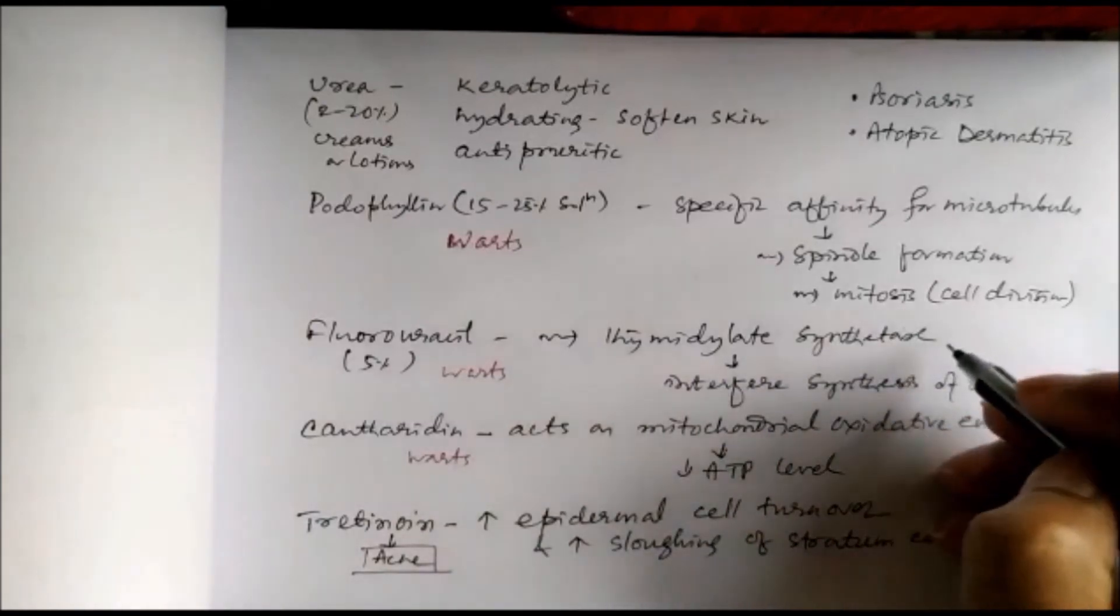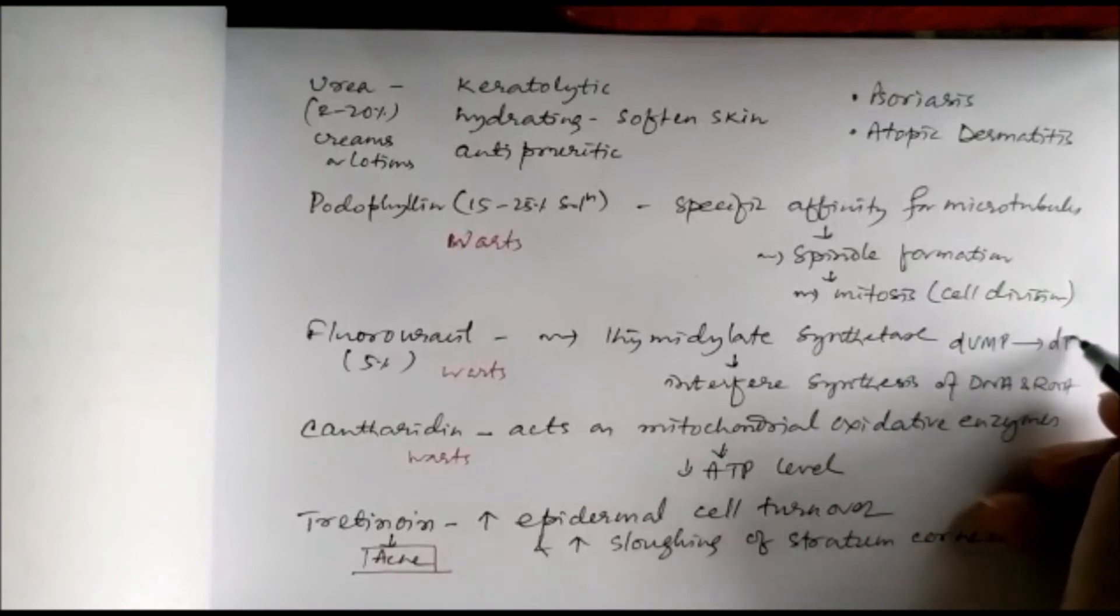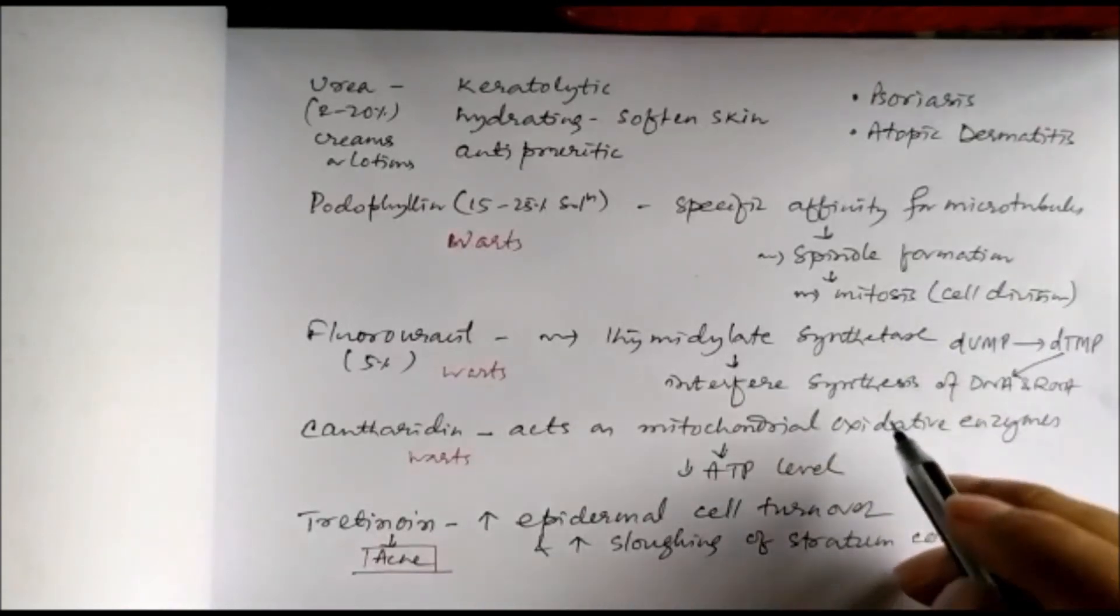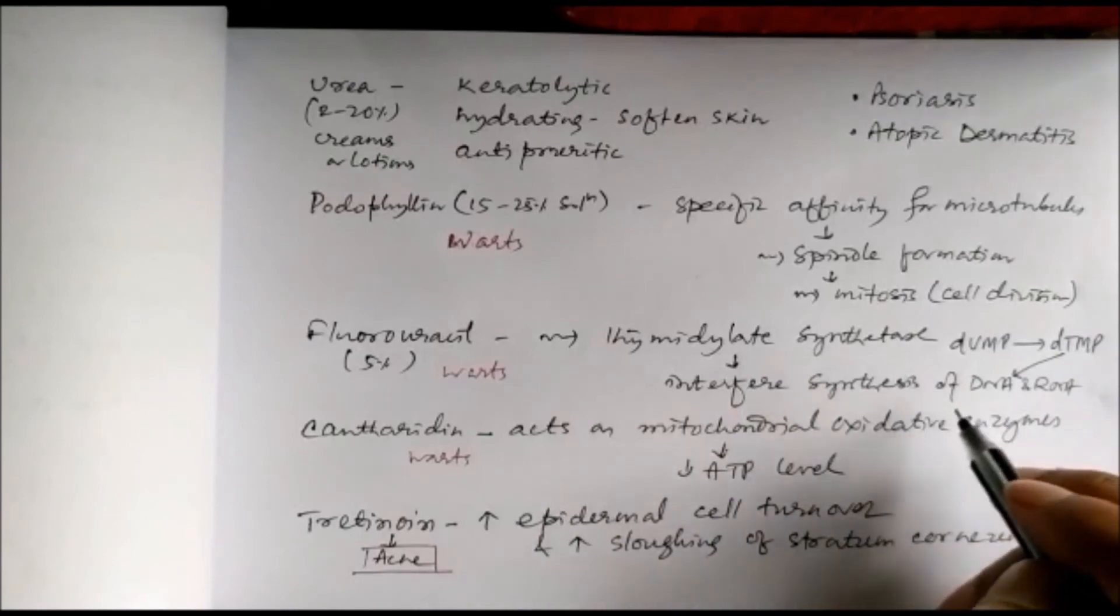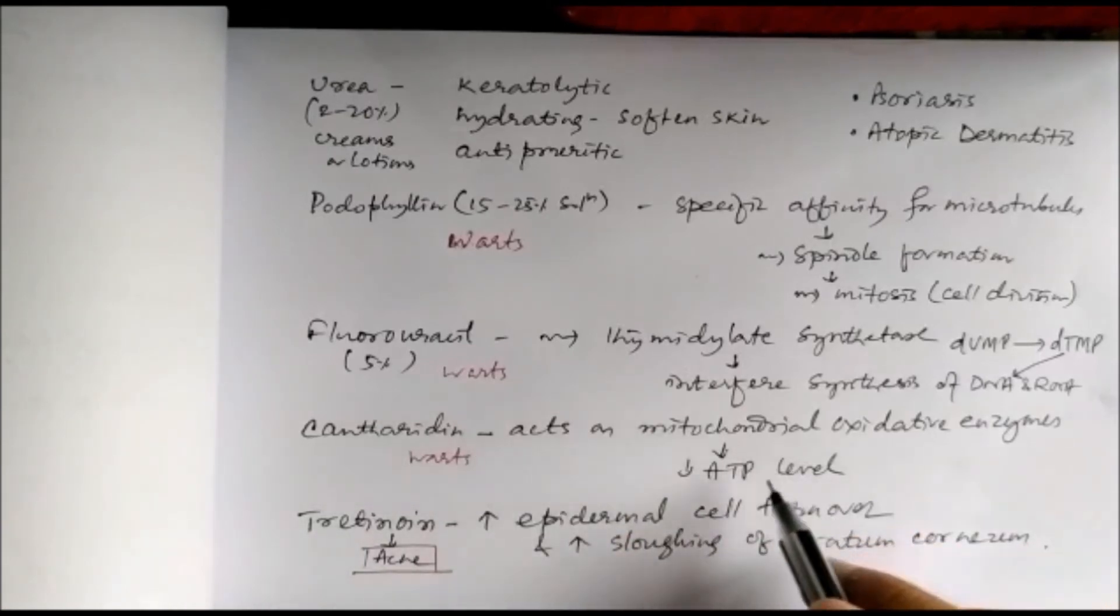Thymidylate synthetase converts deoxyuridine monophosphate to deoxythymidine monophosphate which is required for DNA synthesis. This mostly inhibits DNA synthesis but also can inhibit RNA synthesis. Cantharidine acts on mitochondrial oxidative enzymes and decreases ATP level, which also inhibits cell proliferation.